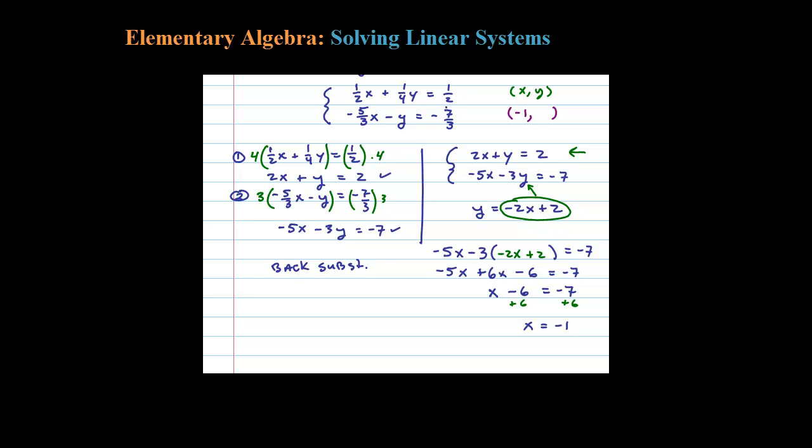You could back substitute into any of the two originals, their equivalents, or even the Y = -2X + 2 equation we solved for, and that's where I'm going to substitute. We're going to plug in X = -1: -2 times -1 is 2, plus 2 equals 4. So when X = -1, Y equals positive 4.